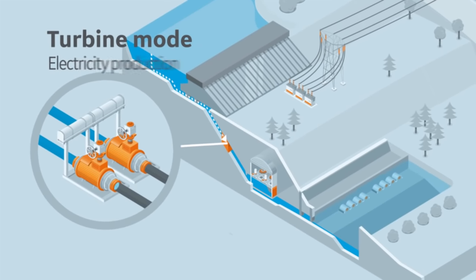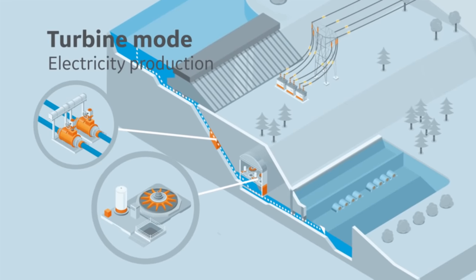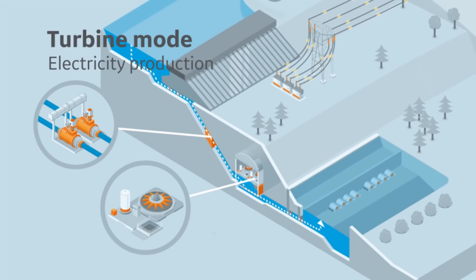When electricity is needed, the gates are opened and the water flows through, driving the turbines, which generate electricity.